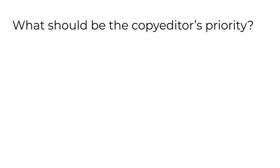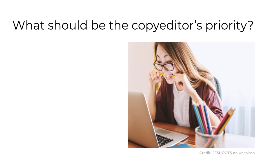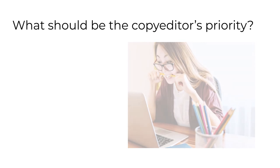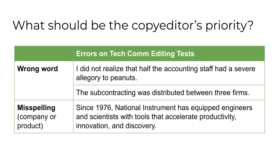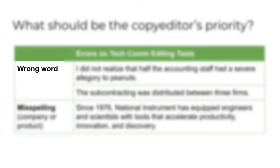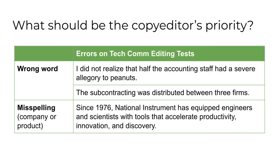UNT's Ryan Bedker studied 55 editing tests given to candidates for tech writing jobs. Those tests represented companies in 21 states and 9 industries. They're not tests for editors per se, but they nicely represent the way non-traditional publishers think about the necessary skills of those whose job role includes writing technical content. The most common error type found in editing tests was the use of a wrong word. In the first example, the material uses a homophone — 'allegory' instead of what we assume is the correct word 'allergy.' Best practice would be to make the change and then query the author to ensure you didn't change the intended meaning. In the second example, 'between' should be replaced with 'among' because there are three firms. Best practice would be to make the change — there's no reason to query the author in this case.